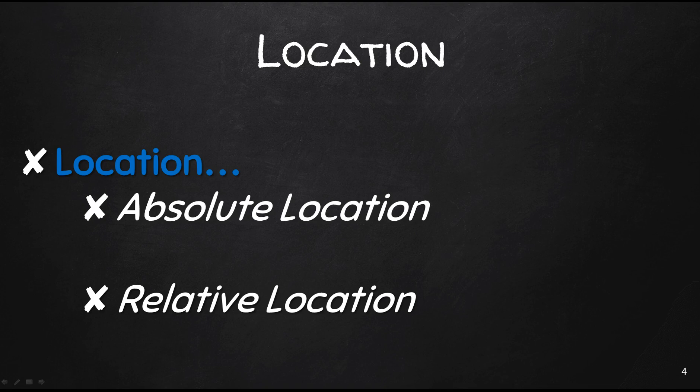Relative location is the location of something relative to other features. For example, the location of the U.S. Capitol is located about 38 miles southwest of Baltimore. So relative location can be expressed in terms of distance, travel time, or cost.